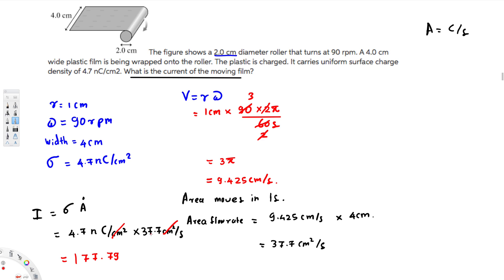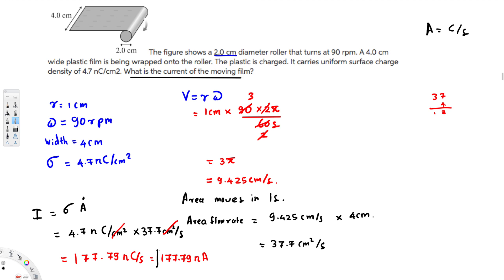Let me verify: 37 times 4 is 28 — yes, this is correct: 177.79 nanocoulombs per second. Since coulombs per second equals ampere, the final answer is 177.79 nanoamperes. That's how we do these kinds of problems — I hope you guys find this video helpful!